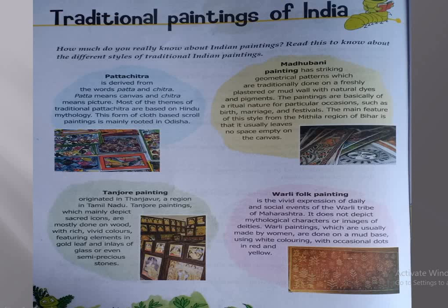The next painting is Tanjore painting, which originated in Tanjawur, a region in Tamil Nadu. Tanjore paintings mainly depict sacred icons and are mostly done on wood with rich, vivid colours, featuring elements in gold leaf and inlays of glass or even semi-precious stones.